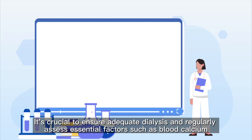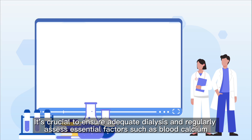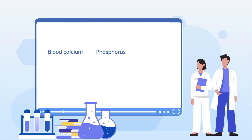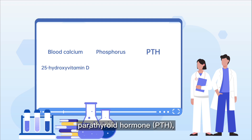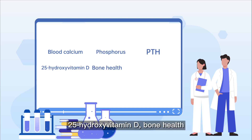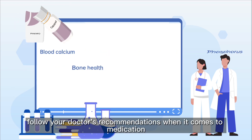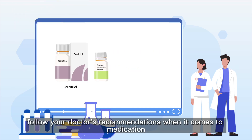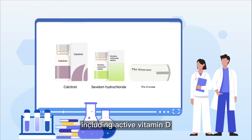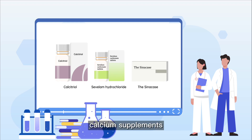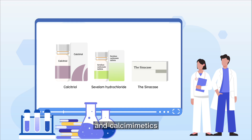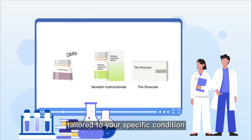It's crucial to ensure adequate dialysis and regularly assess essential factors such as blood calcium, phosphorus, parathyroid hormone, 25-hydroxyvitamin D, bone health, and vascular calcification. Additionally, follow your doctor's recommendations when it comes to medication, including active vitamin D, calcium supplements, phosphorus binding agents, and calcium emetics, tailored to your specific condition.